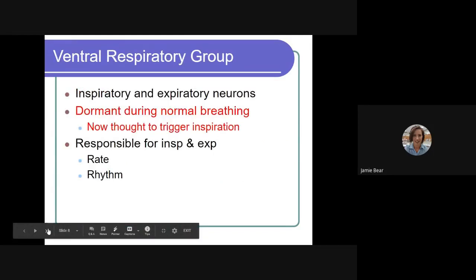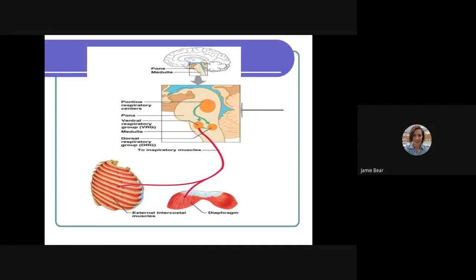The specialty neurons also located in our medulla are the ventral respiratory group. The ventral respiratory group are there to activate exhalation. They could be more dormant during normal breathing. And they actually are responsible for both inhalation and exhalation, but they really do activate that exhalation of our breath and allow us to once again start the process again.